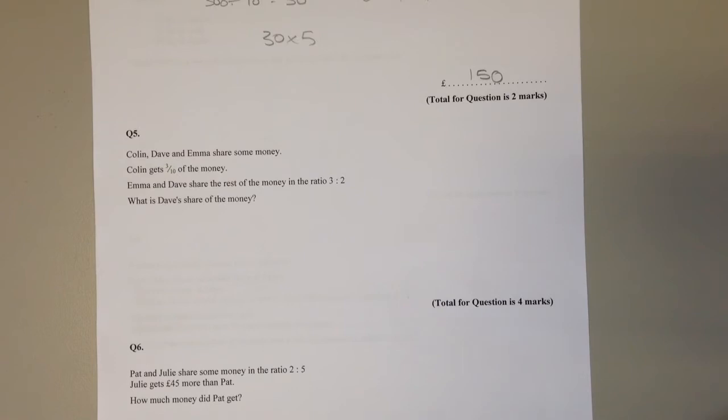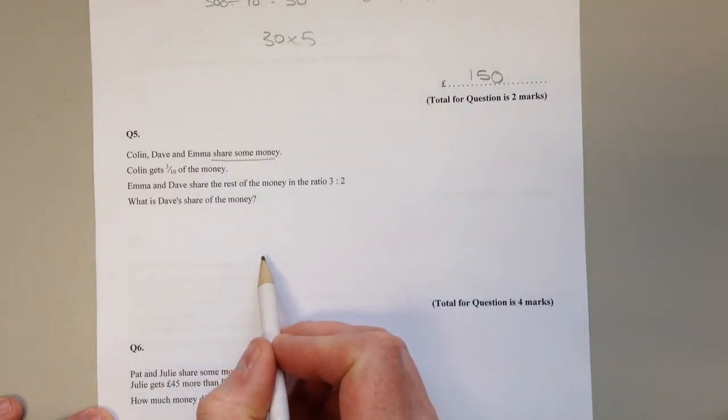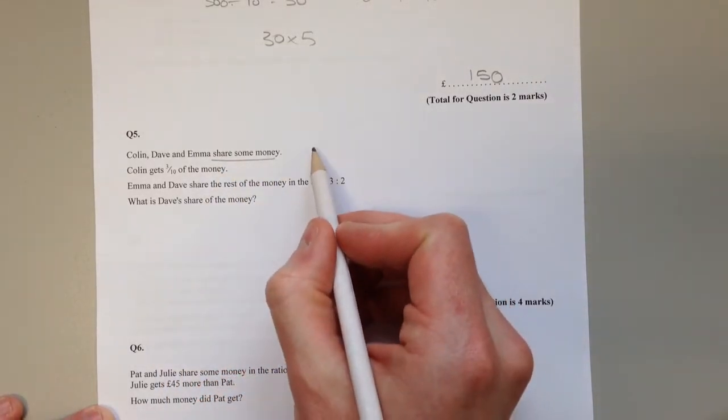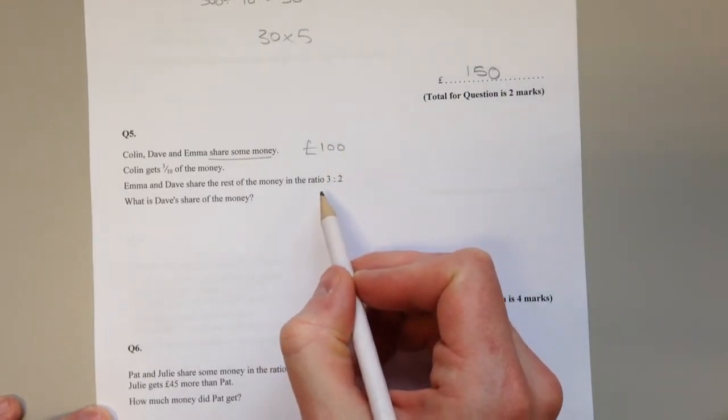Question 5. This has to do with sharing in a ratio again, but it's slightly more difficult. The difference is we're not told how much money. All we're told is that they share some money. I think the easiest way to do this is to imagine they shared 100 pounds and see what happens.